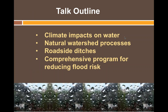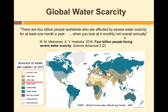There are four parts to the talk. First, I'm going to talk about climate impacts on water, then what are natural watershed processes, we're going to focus in on roadside ditches, and then come back to a comprehensive program for reducing flood risk. The real issue worldwide is becoming water, and arguably water scarcity is becoming more important than energy. There are 4 billion people worldwide who are affected by severe water scarcity for at least one month a year — more than half the world's population are already dealing with water scarcity, making it a critical issue.